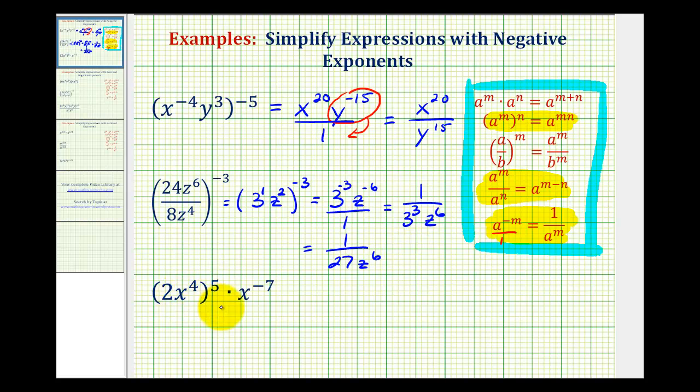And looking at a third example, we need to simplify this first. So this would be 2 to the 1st, x to the 4th, raised to the 5th.